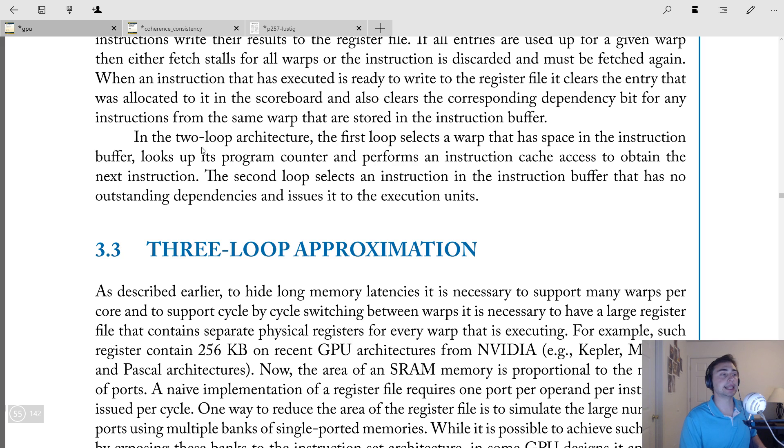So basically the key idea is that in this two loop architecture, the first loop that we described up front selects a warp that has space in the instruction buffer, looks at the program counter and performs the instruction cache access to obtain the next instructions. So we've got these warps and we need to pick, say, Hey, you're the one that's going to we need an instruction from you now. And you've got space in the instruction buffer, go ahead and put an instruction in the instruction buffer. Now the second loop itself goes, okay, now that we have all these instructions, we have to figure out which ones are eligible to execute. And these can be multiple instructions from the same warp. And all that we have to do is we need to check to make sure that its dependencies are cleared.